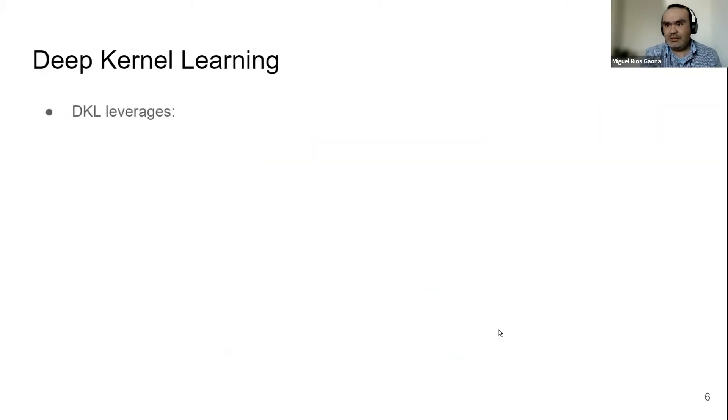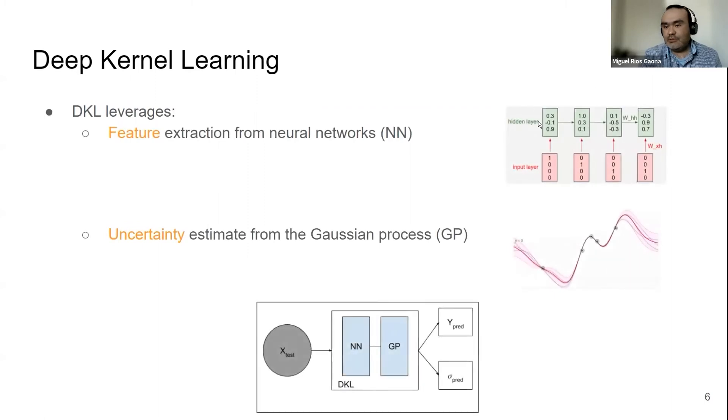So what is deep kernel learning? Deep kernel learning leverages feature extraction from neural networks. For example, in our case, we are going to use RNNs that are very good at the notion of order or compressing time, previous time steps, and the uncertainty from the Gaussian process.